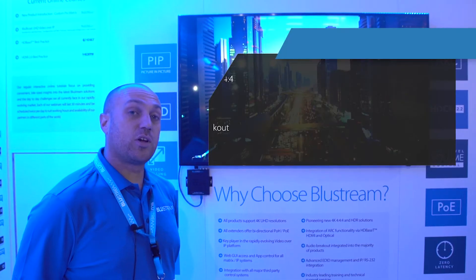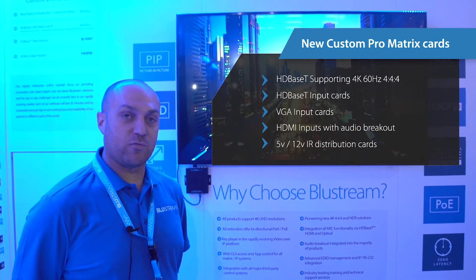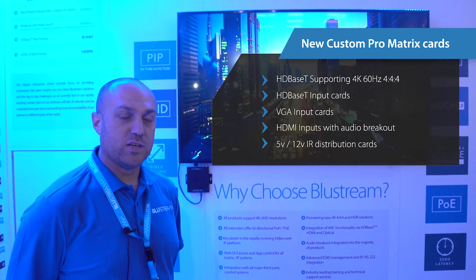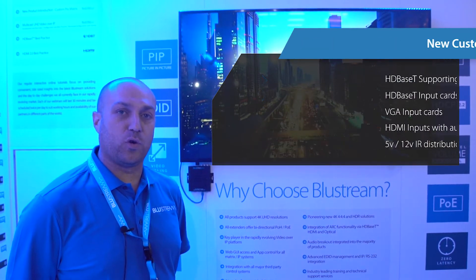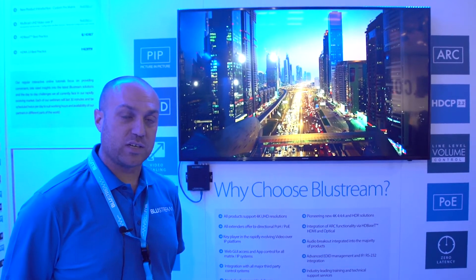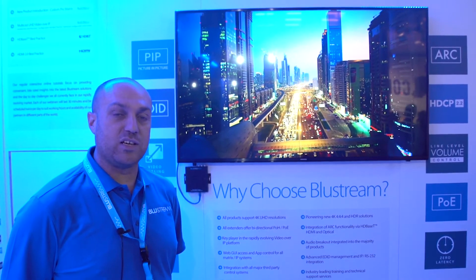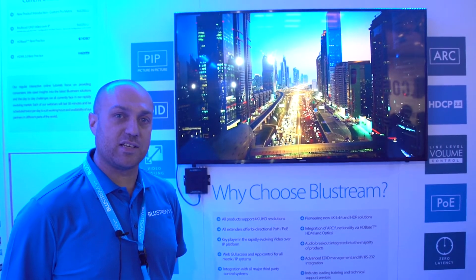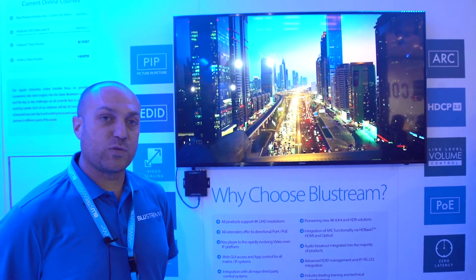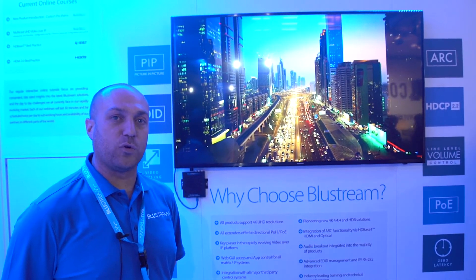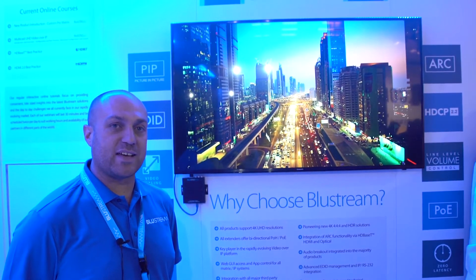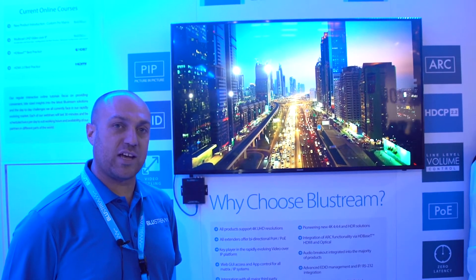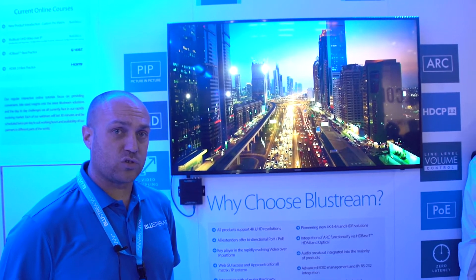Our new custom Pro Hub has a varying range of new input and output cards. These allow for 4K 60 4:4:4 to be inserted into the matrix and sent via HDBaseT using CSE technology. CSE stands for color space conversion and gives us the ability to take a 4:4:4 color gamut and convert it to 4:2:0, giving us the data rate needed to send over the HDBaseT infrastructure.